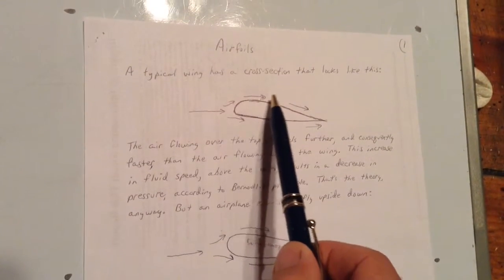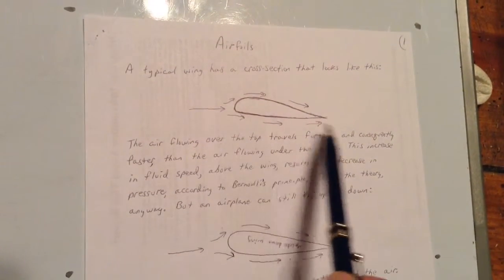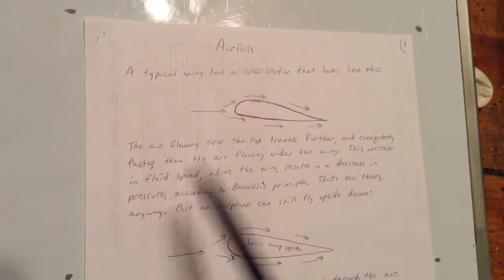Notice it's a little further for the air to travel over the top of the wing than it travels under the bottom of the wing. This is the front of the wing, this is the back of the wing.